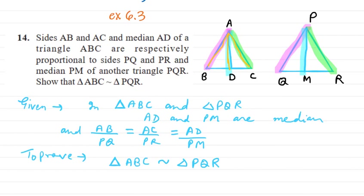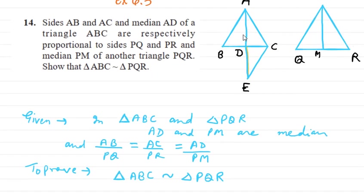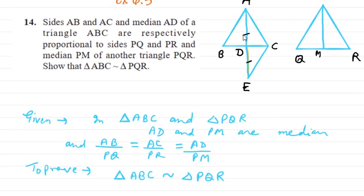For the construction, there are two ways. We extend the median AD to point E such that AD equals DE. Similarly, we extend PM to point S such that PM equals MS. This construction is done for both triangles.